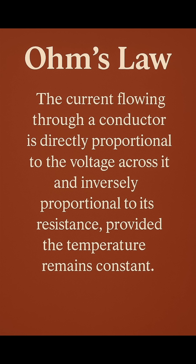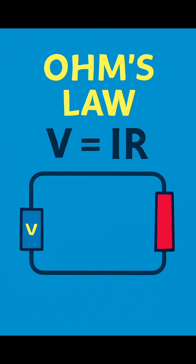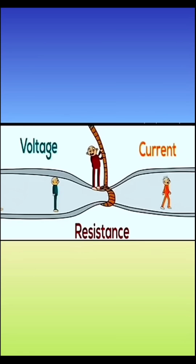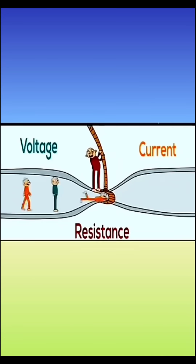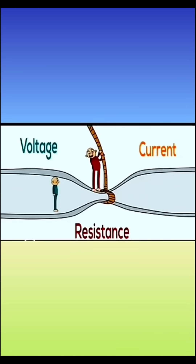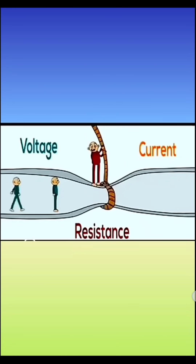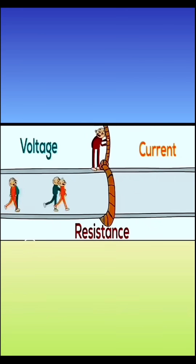Ohm's Law states that current is directly proportional to voltage and inversely proportional to resistance. The formula? V equals I times R. Voltage pushes the current, resistance tries to block it, and current is what flows through the circuit.